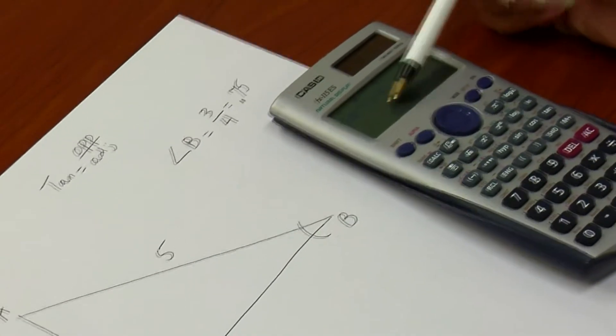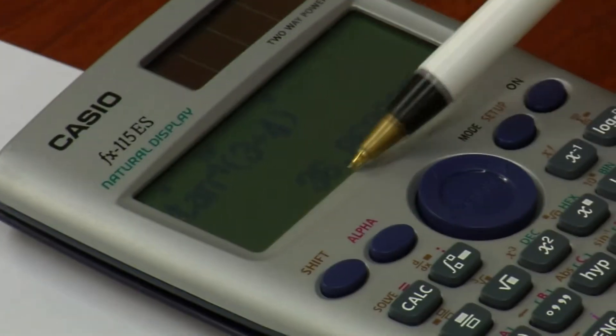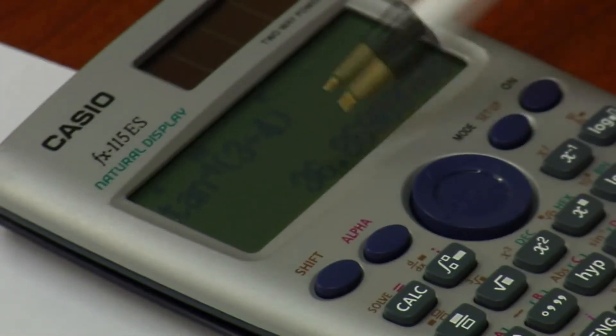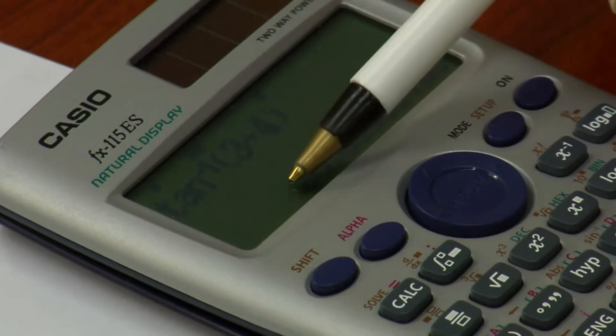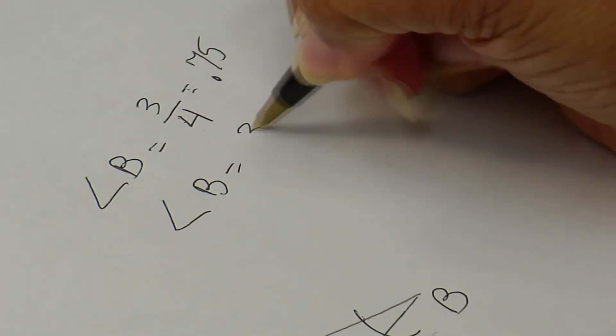In this case, I'm rounding to the nearest whole number, which we call rounded to the nearest degree. So this is 36.8. Because of the 8, I'm rounding this up to 37. So angle B is a 37 degree angle.